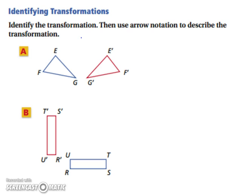Let's try to identify some transformations, then use arrow notation to describe the transformation. If we're looking at this figure, we can picture a line kind of shooting down between the two. And you can see that the two are kind of reflecting over this line. So therefore, we have a reflection.